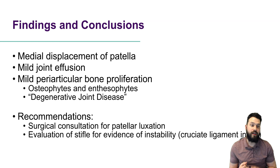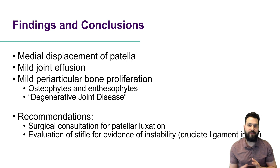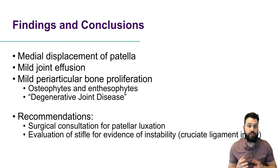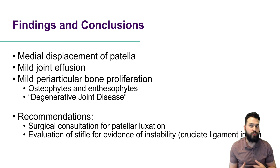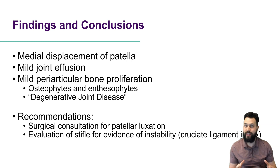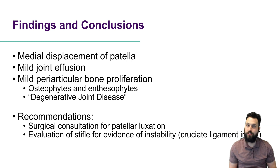For our findings, we found medial displacement of the patella, mild joint effusion, and mild periarticular bone proliferation — those are osteophytes and enthesophytes, and they're evidence of degenerative joint disease. For recommendations in a case like this, we would want a surgical consultation to treat that patellar luxation. Importantly, patellar luxations don't always present with stifle effusion, so if we're seeing that increase in soft tissue opacity, it's really important to evaluate that stifle for concurrent instability or cruciate ligament rupture. We want to sedate the patient and get a nice examination looking for tibial thrust or drawer of the stifle.